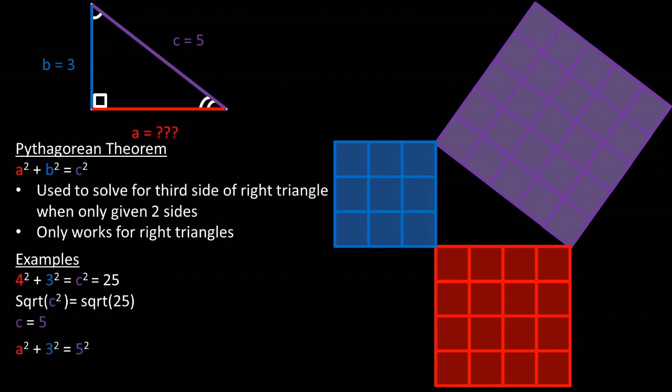Now let's complete the same process, but this time we are only given the b length of three and the c length of five. Plugging this into the Pythagorean theorem and rearranging the formula to get a squared to one side, we are left with c, which is five, squared, minus b, which is three, squared, being equal to a squared.